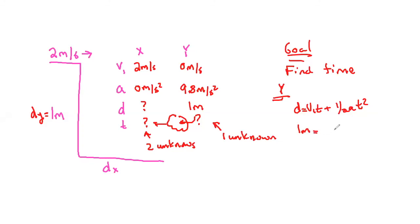We'll say D equals VIT plus 1 half A T squared. 1 meter equals 0 times T. That's awesome because that's going to go away because anything times 0. 1 half 9.8 T squared. So I have 1 equals 4.9 T squared. I can then take the square root of that and say 1 over 4.9 is going to be my T. Now, guys, this is for the X and the Y.